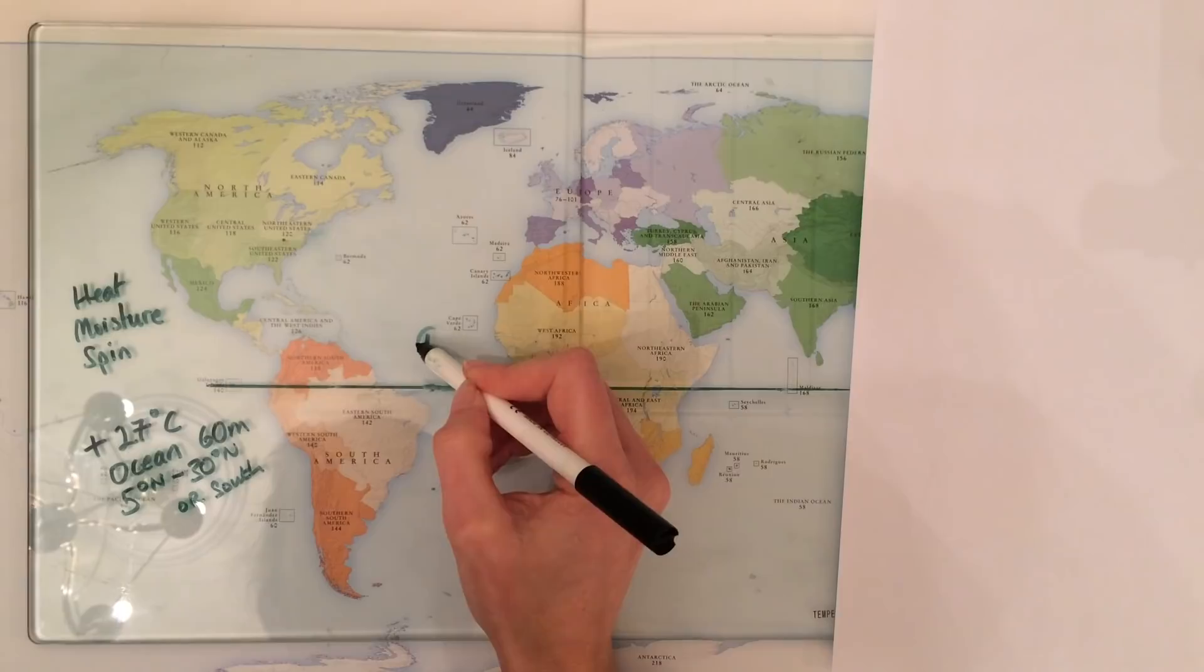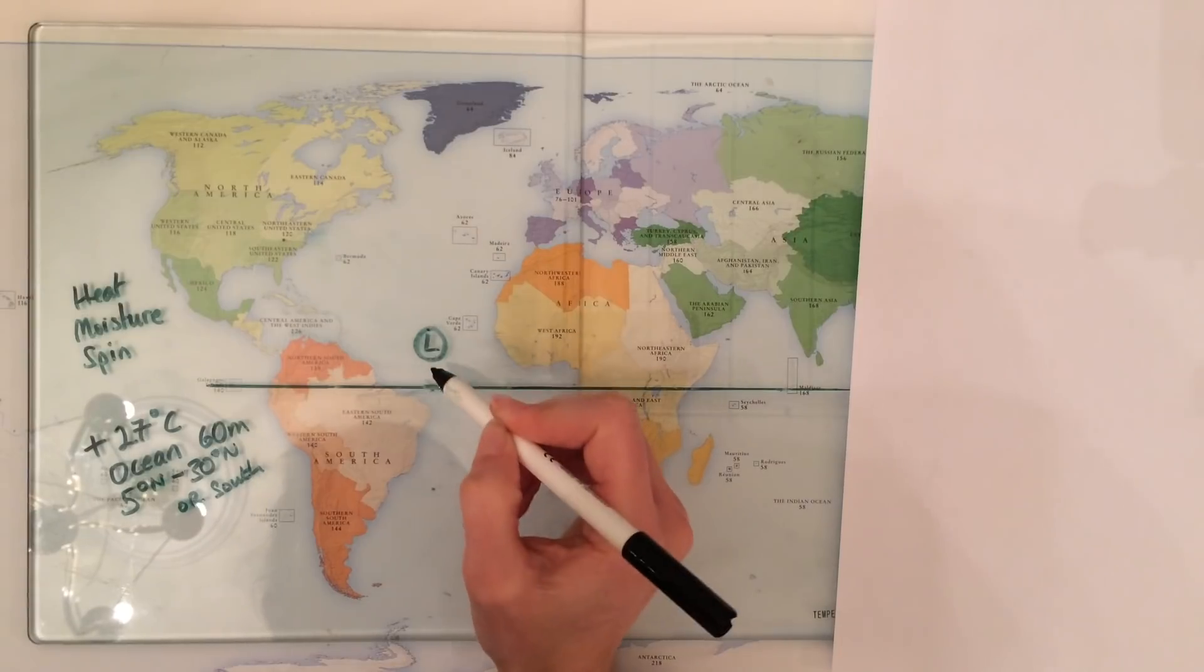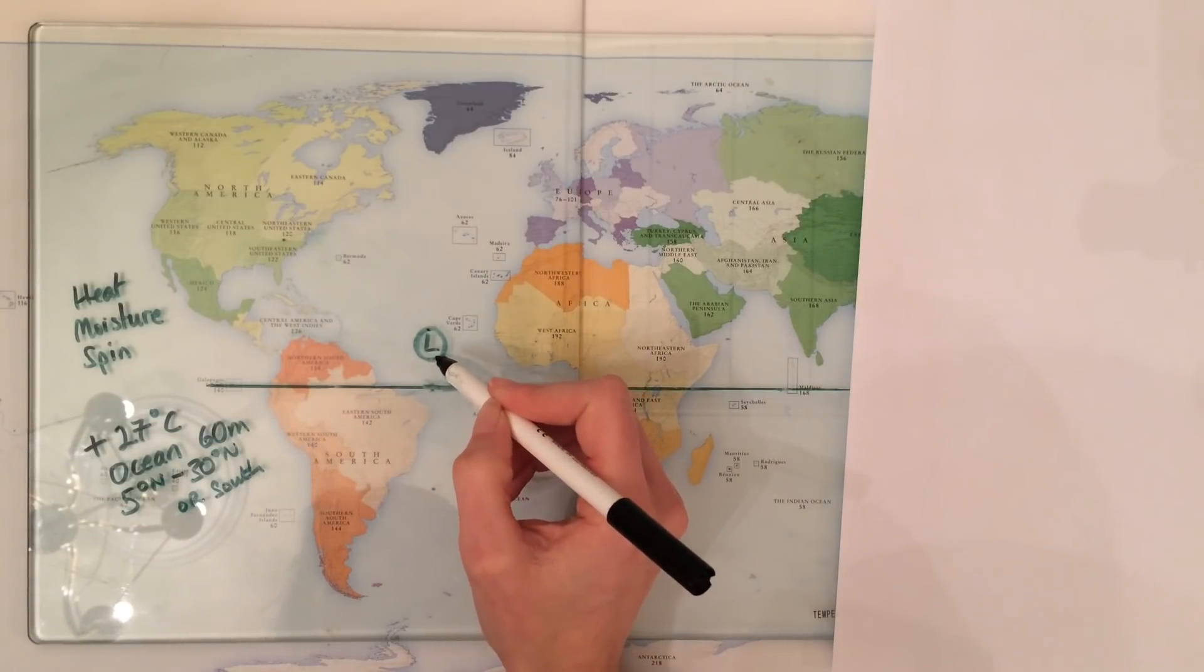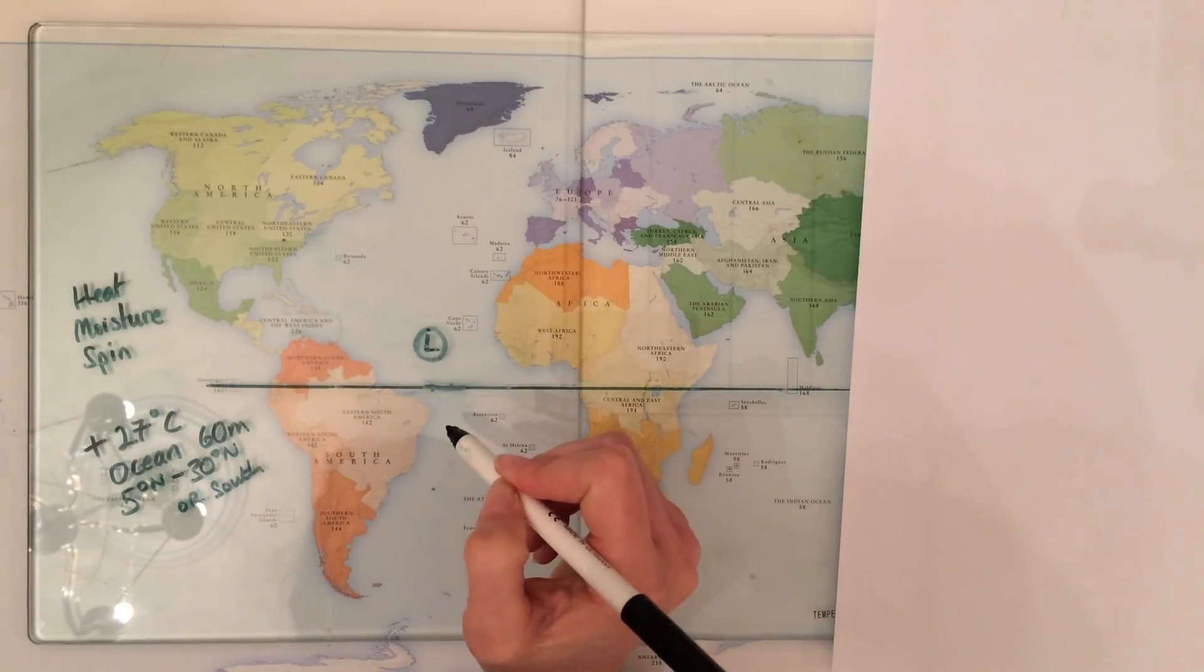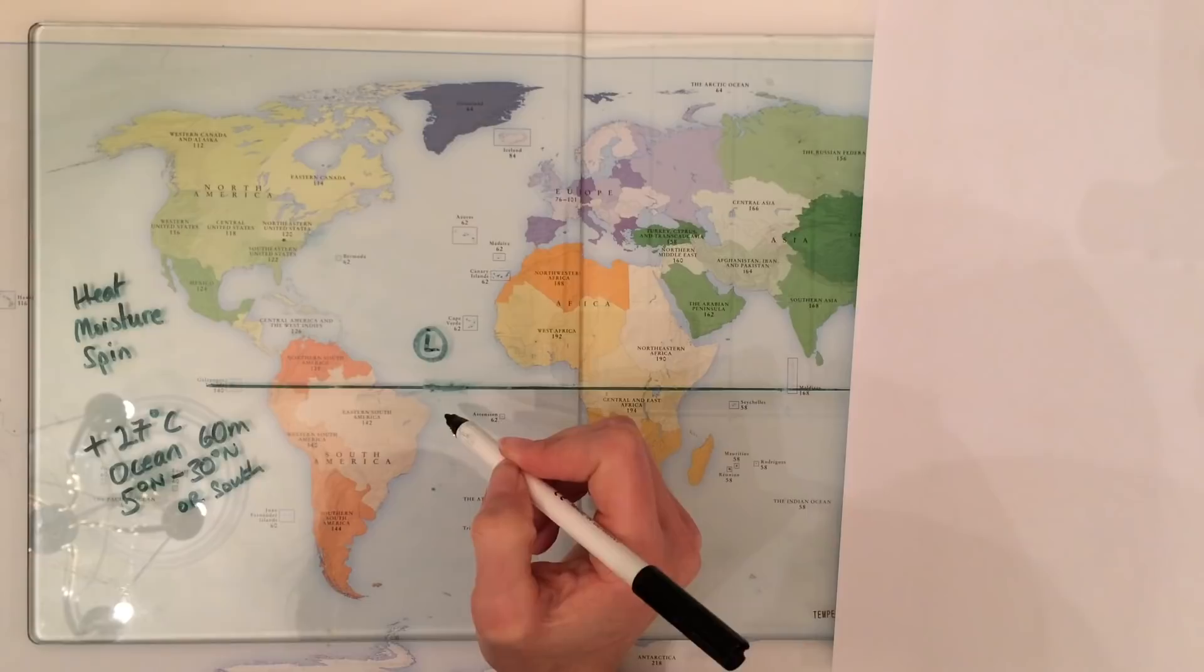We have here an area of low pressure because the air above the ocean just here is nice and warm. It's being warmed by the nice warm deep sea, and as that air warms, it starts to rise and it rises rapidly. That creates an area of low pressure at the surface.